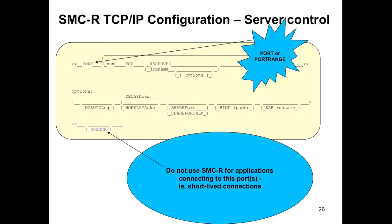Another optional parameter useful for certain workloads is the PORT or port range statement. SMCR provides significant latency reduction for almost every workload, but some workloads are so short-lived that the connection setup overhead can overwhelm the benefit — a very short send-one-request/get-one-reply/terminate-connection pattern may not be the best for SMCR. You can control this with a PORT statement: specify that anyone connecting to a particular port should not use SMCR. Even if the client requests SMCR, the server-side port definition says 'no SMCR' and the connection falls back to TCP.